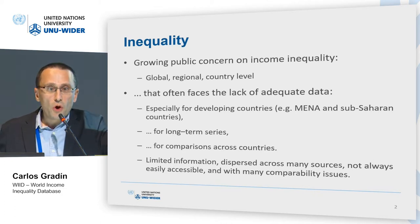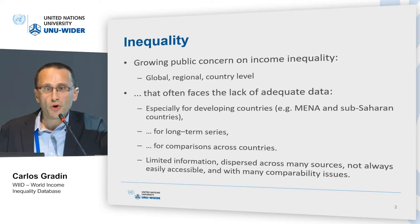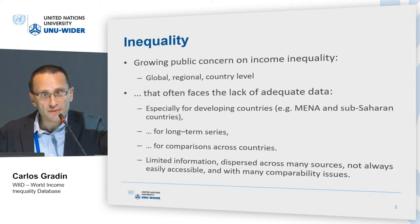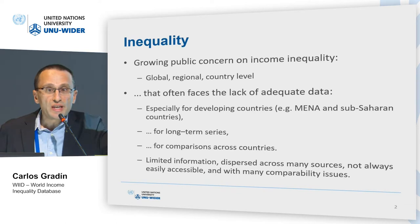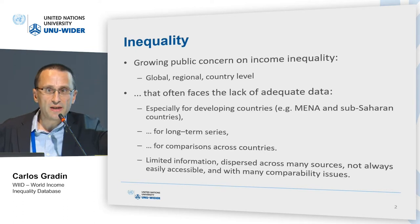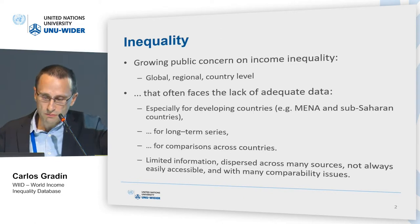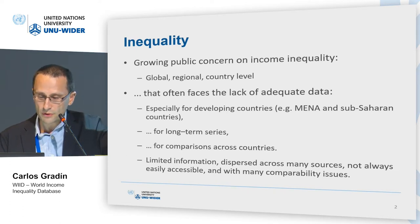Also, when it comes to comparing long-term series, there is a lack of compatibility due to changes in methodologies, sampling methods, and the surveys used to compute inequality. When we want to make comparisons across countries, some countries use income as the main well-being indicator, some tend to use consumption. And even when we talk about income, there are many different ways of defining it, and they are not always comparable. So limited information is dispersed across many sources, and if one wants to know inequality across all countries in the world, one has to consult many sources — not always easily accessible and with severe comparability issues.